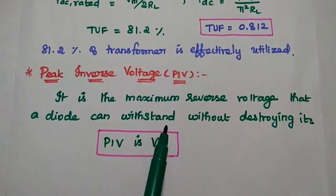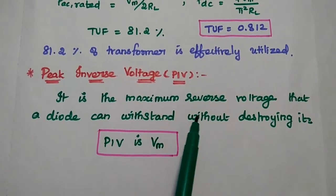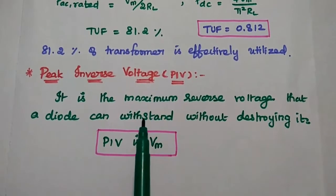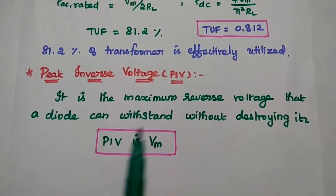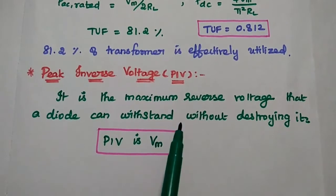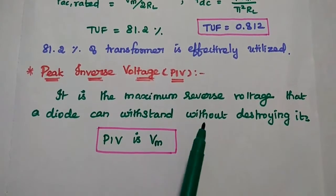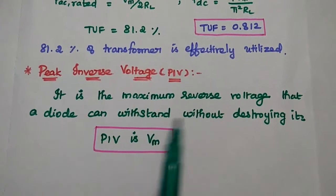The last characteristic is peak inverse voltage (PIV). It is the maximum reverse voltage that the diode can withstand without destroying the junction. The peak inverse voltage for the bridge rectifier is Vm.